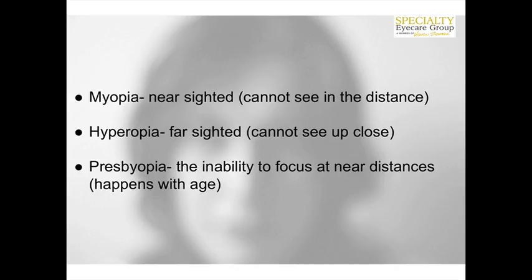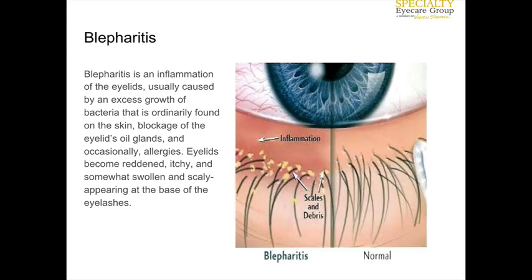The terms myopia, hyperopia, and presbyopia indicate whether a person is nearsighted (can't see in the distance), farsighted (can't see up close), or has the inability to see at multiple distances, as with presbyopia.